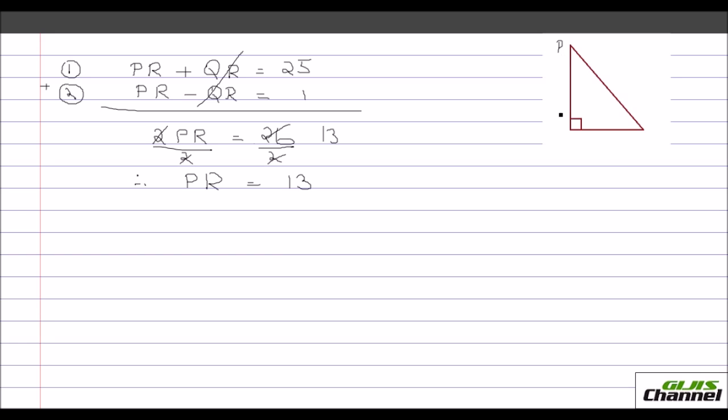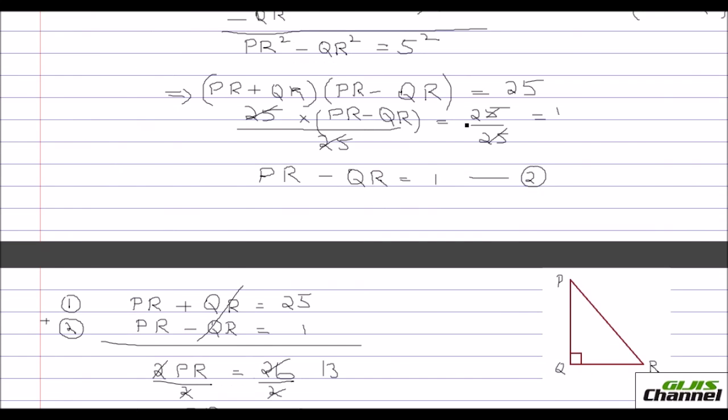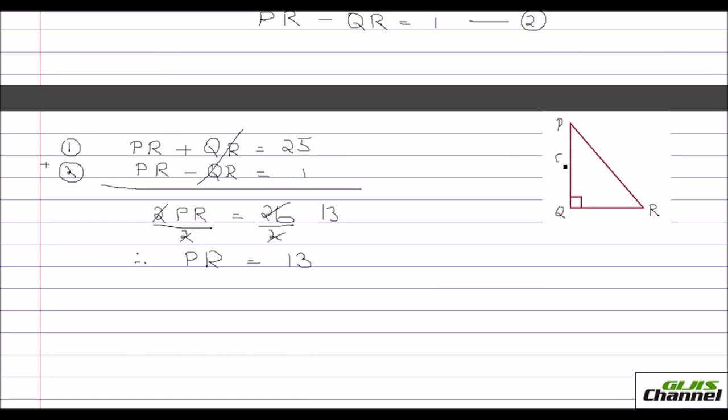You have P, Q and R. They had already given you, PQ is given as 5. Now you know PR is 13. The hypotenuse side is 13. Substitute PR in equation 1. So what happens? PR is 13. 13 plus QR equals 25. So your QR would be, take away 13 from both sides, which is 12. You get your QR as 12.